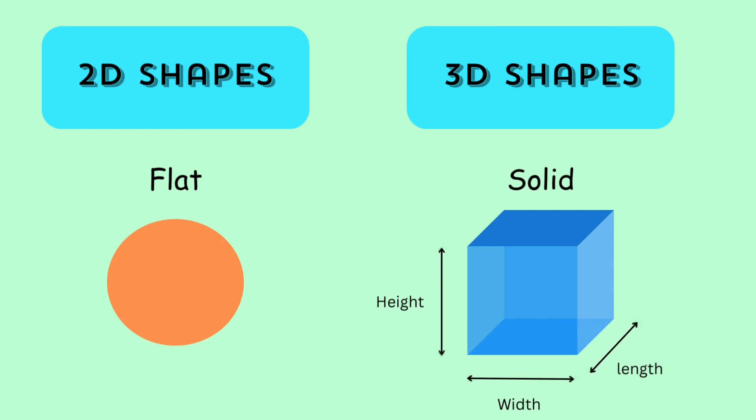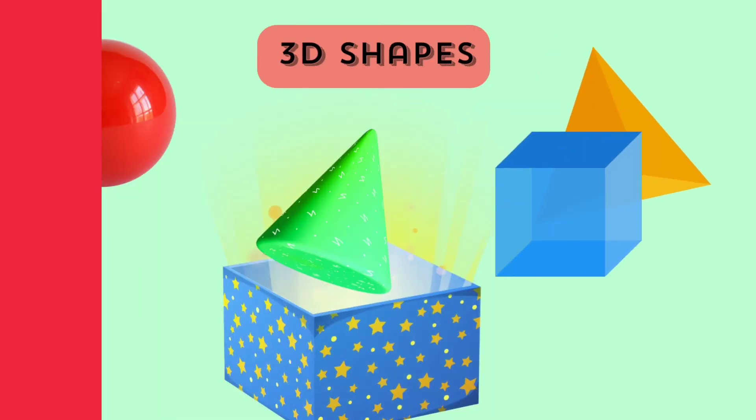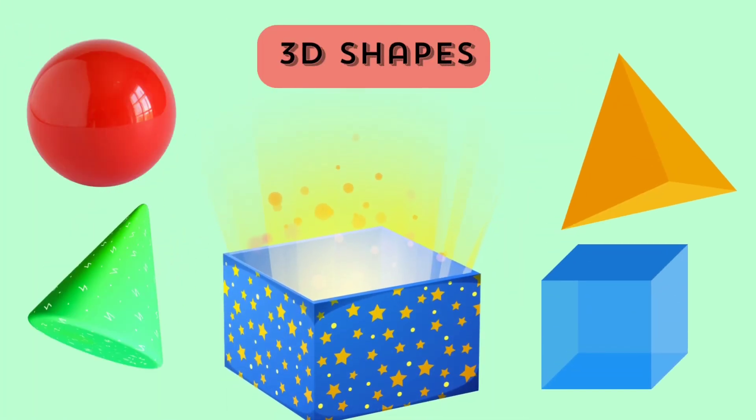3D shapes are solid. It has length, width and height. For example, we can say cube, sphere, cone.